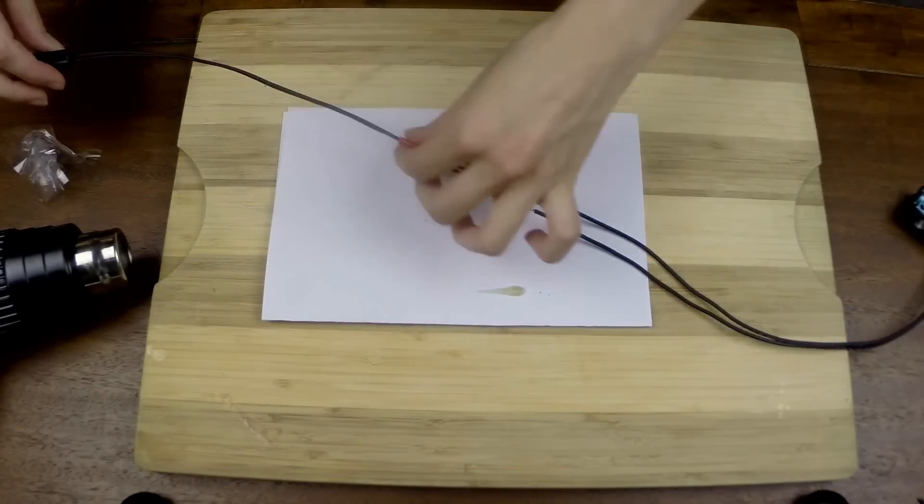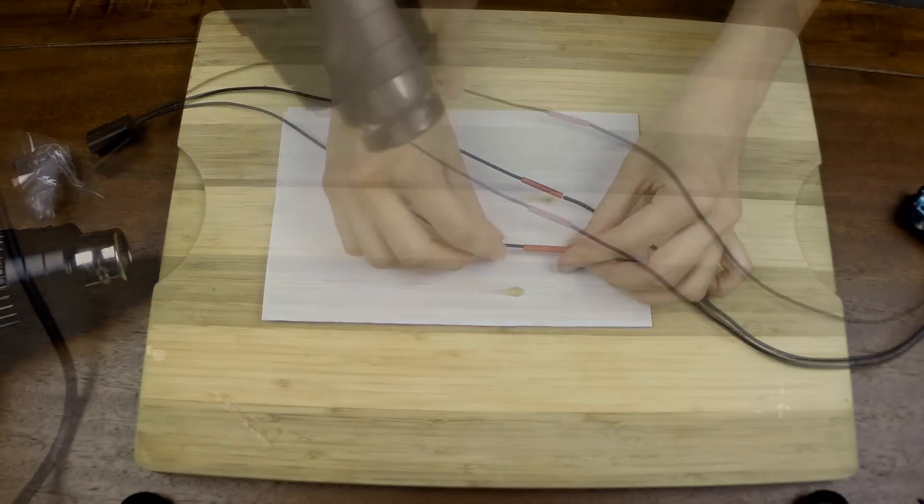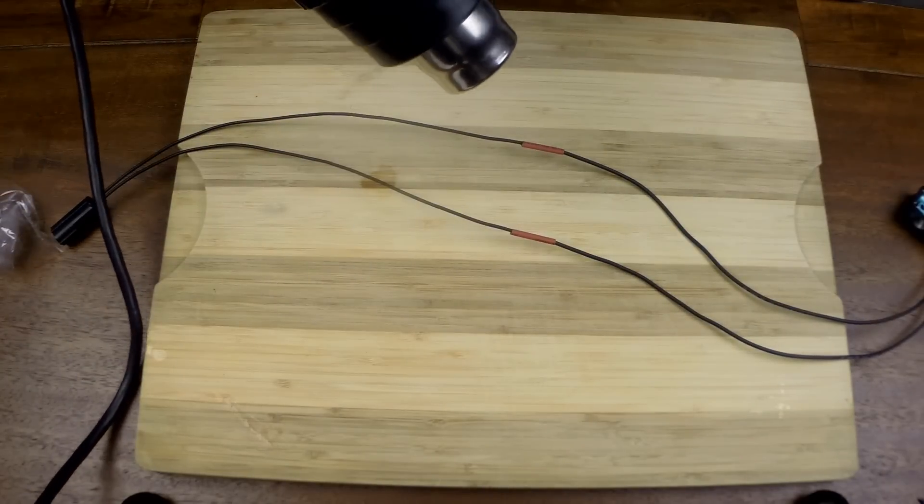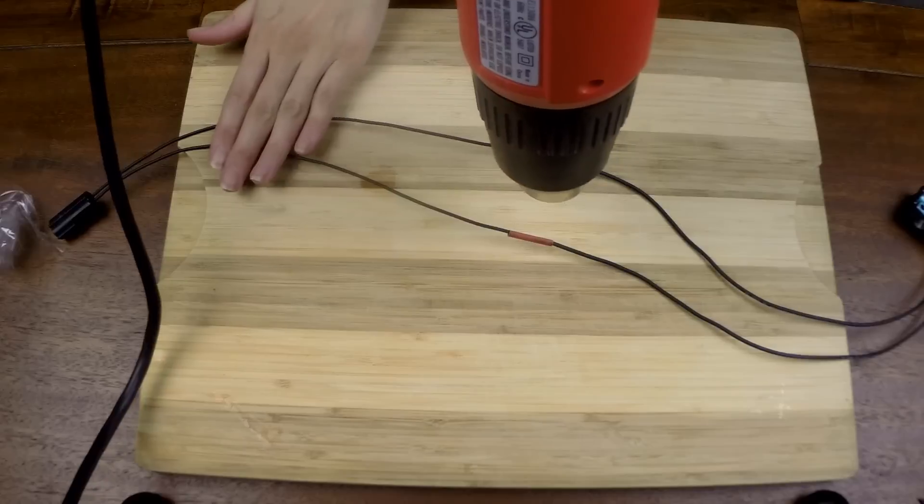Now it's time to put into place the heat shrink we slipped on earlier. To do this, slide the wrap over the solder then grab a heat gun and gently apply heat until the wrap fully embraces the wire.